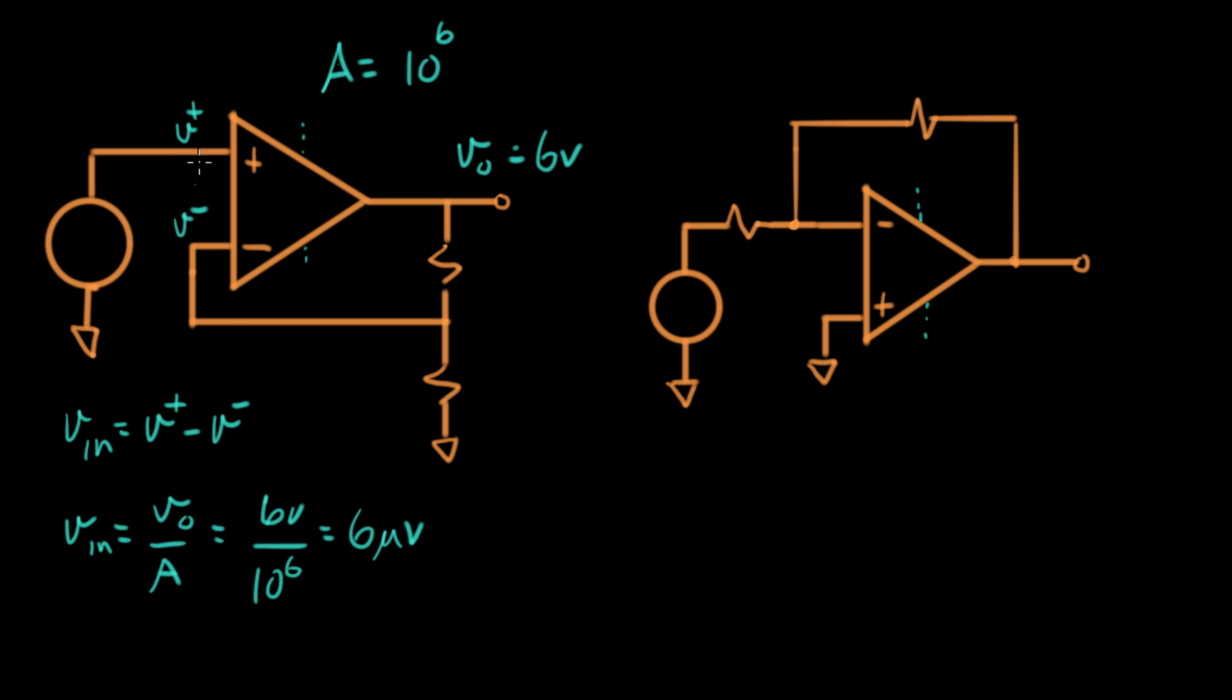So this is six microvolts between here and here. So with six volts here, there's six microvolts over here. This is a really small voltage. In order for this op amp to have an output voltage that stays between plus or minus 12 volts, this voltage over here has to be really small. It has to be down to the microvolts level.